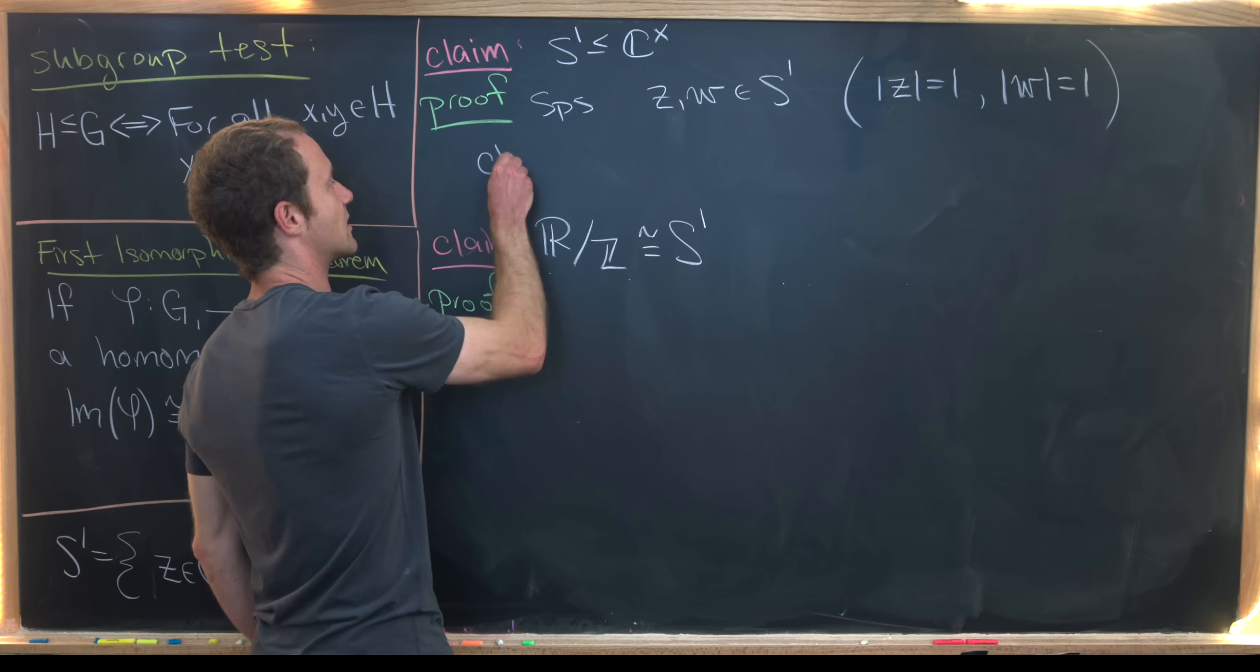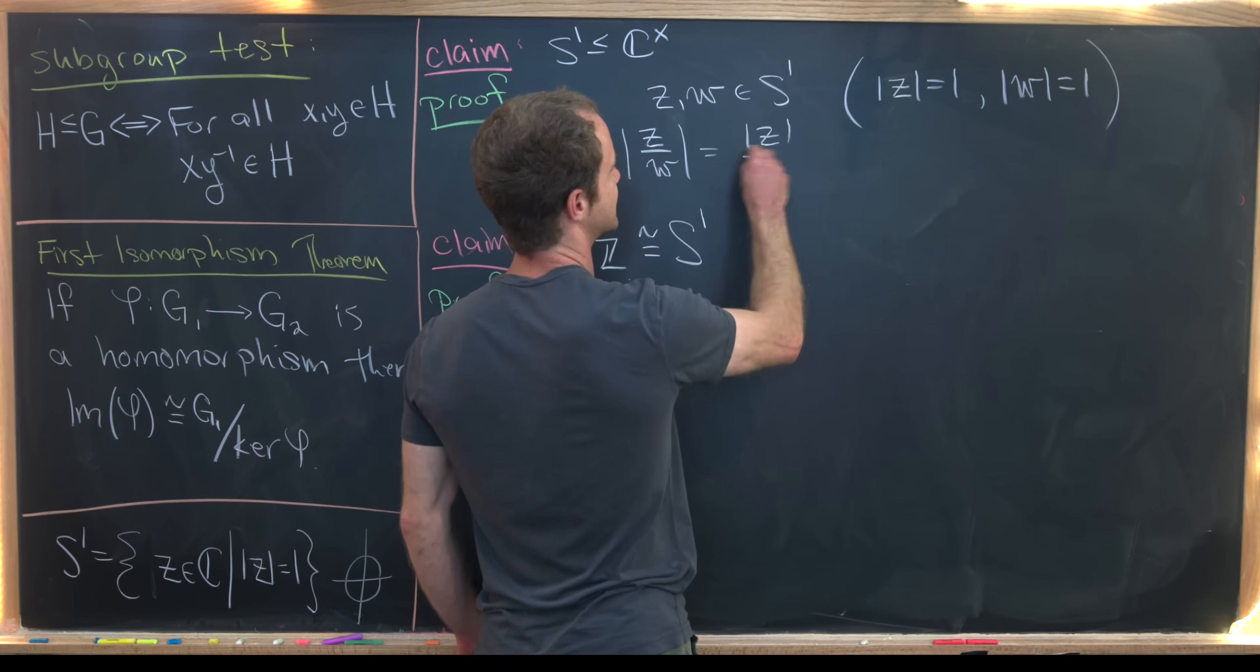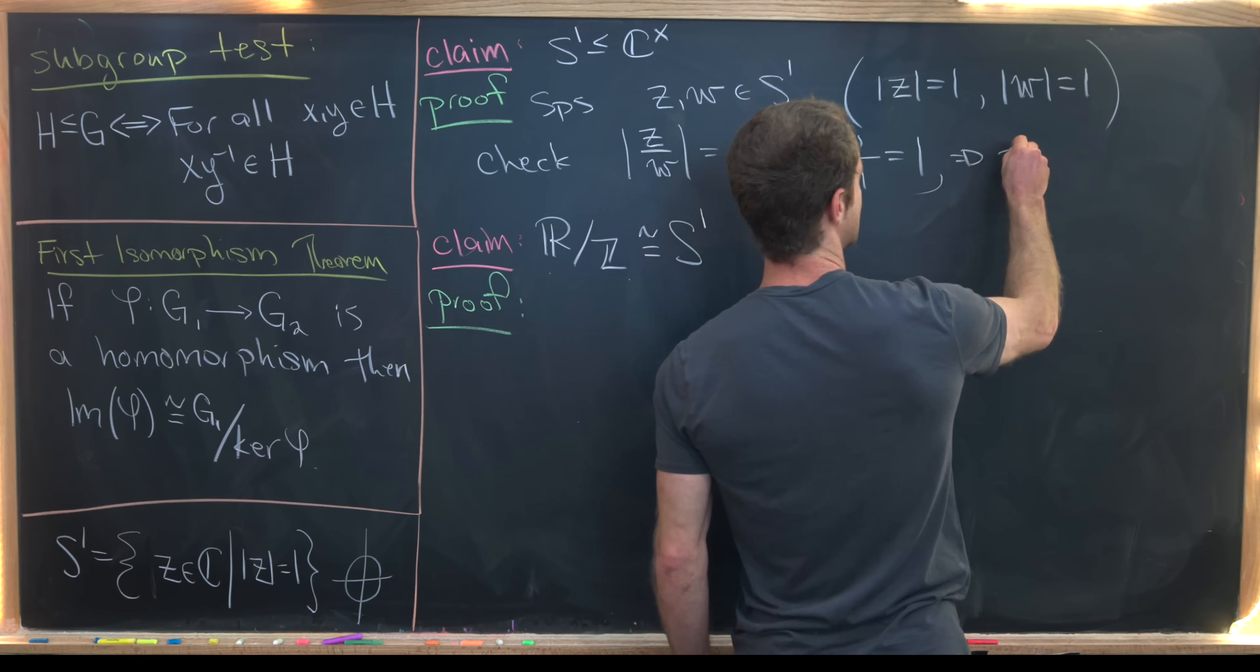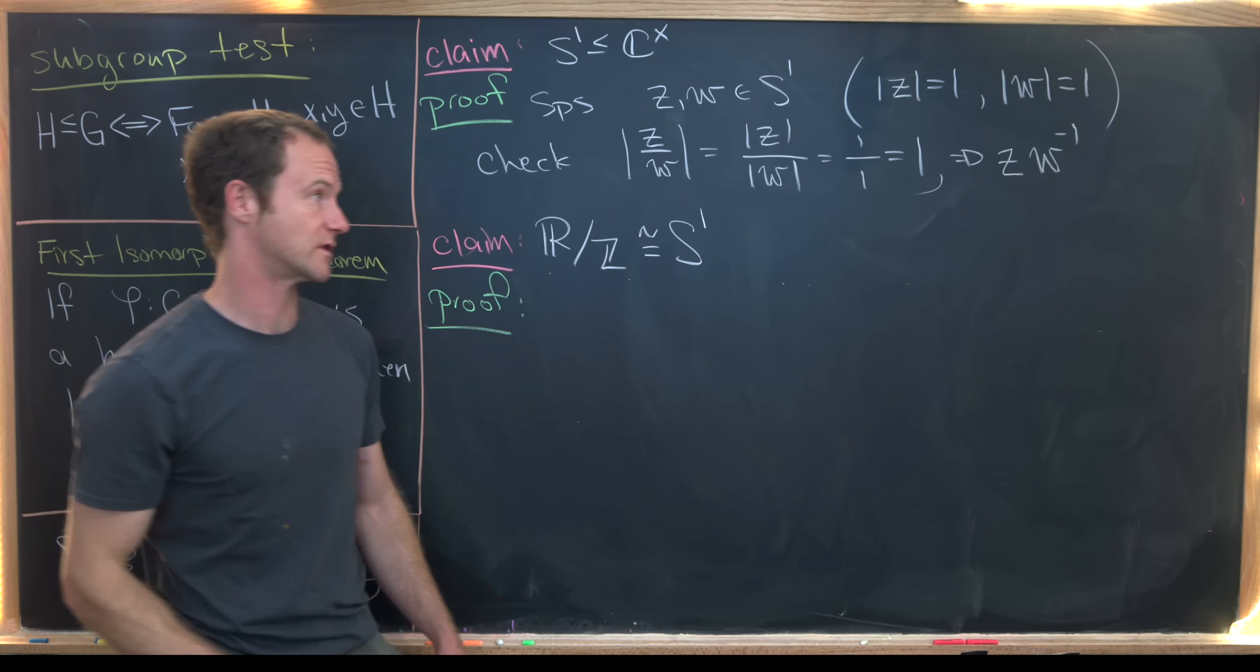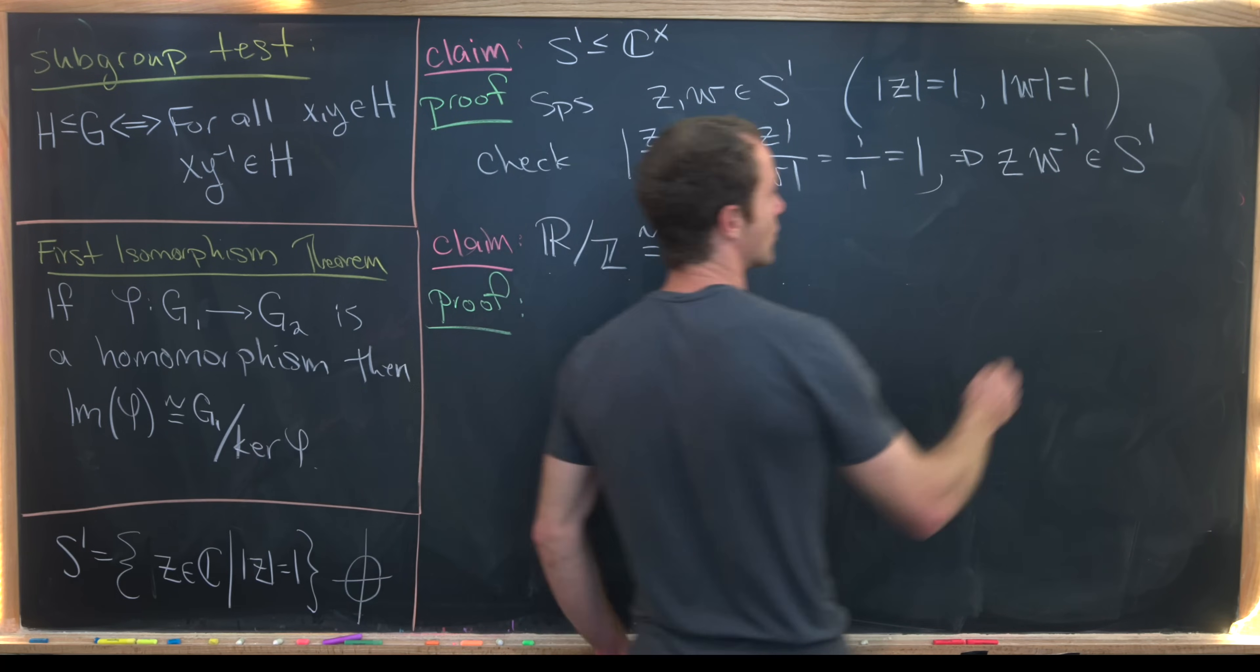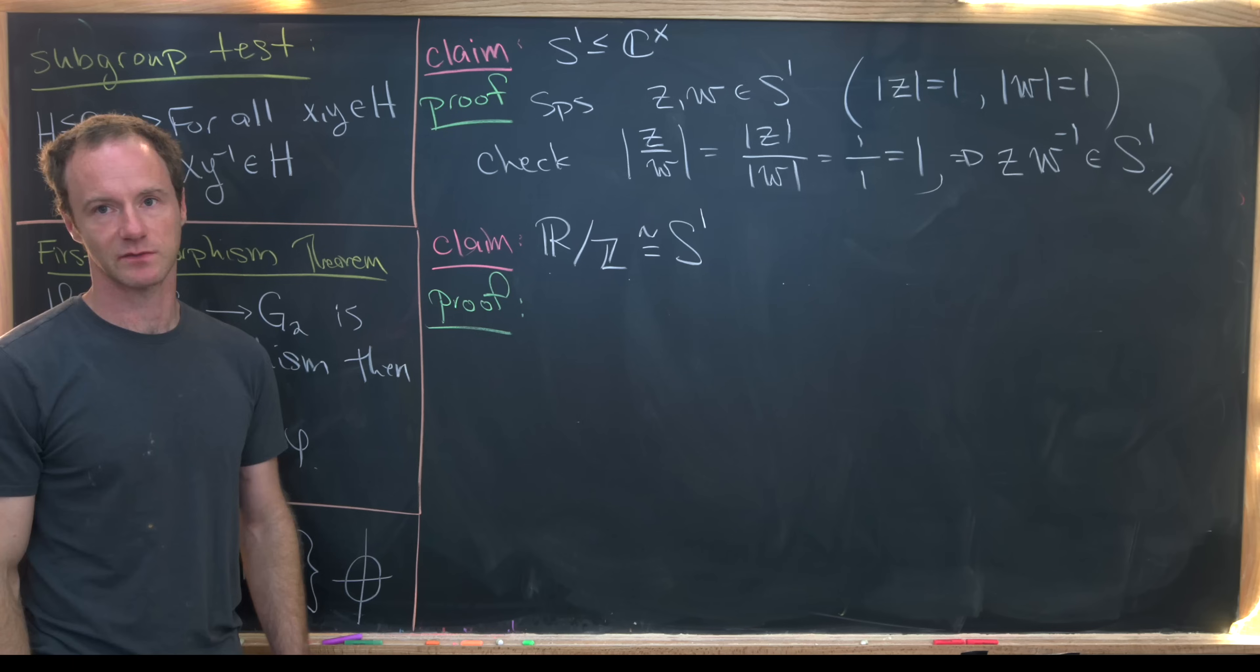But from here, it's easy to check that the modulus of Z over W is equal to the modulus of Z over the modulus of W, which is equal to one over one, which is one. So that tells us that Z times W inverse, in other words Z over W, is also an element of S1, given that its modulus is one. That's really all you need to do to check that the unit circle is indeed a subgroup of the multiplicative group of non-zero complex numbers.